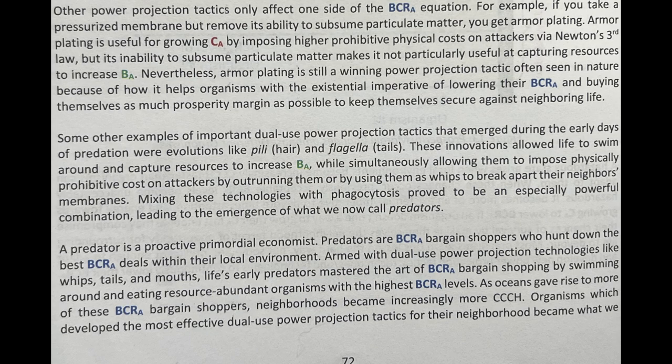Armored plating is useful for growing CA by imposing higher prohibitive physical costs on attackers via Newton's third law, but its inability to subsume particulate matter makes it not particularly useful for capturing resources to increase BA. Nevertheless, armored plating is still a winning power projection tactic often seen in nature because of how it helps organisms with the existential imperative of lowering their BCRA and buying themselves as much prosperity margin as possible to keep themselves secure against neighboring life.